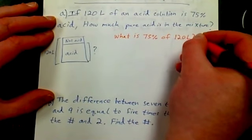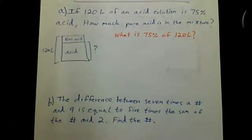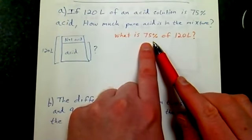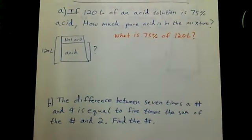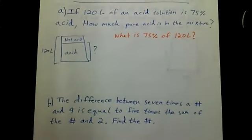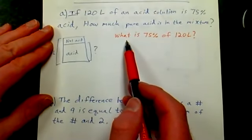If you need to pause the video and take a look and see where this is coming from, that's what we need to know: 75% of 120 liters will be the pure acid solution. Now there's math terms that kind of go with these words.